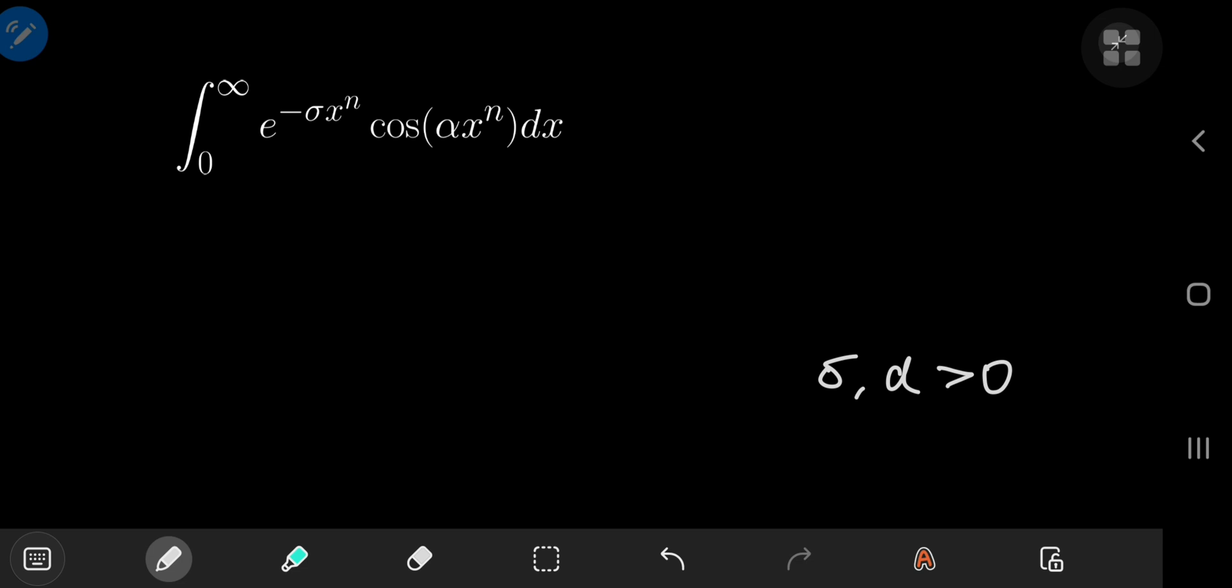And as far as the n parameter is concerned, we're just going to work through the solution and figure out later what kind of restrictions we need to impose on the n variable. So let's call the integral i. And because we see a cosine term being multiplied by an exponential function, immediately we think Euler's beautiful formula.